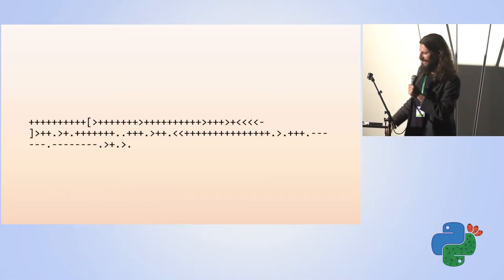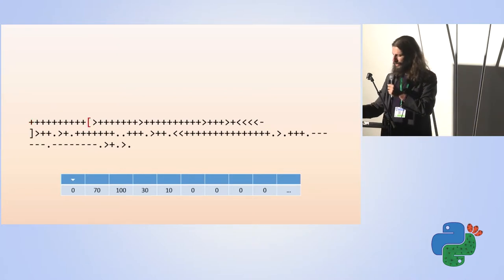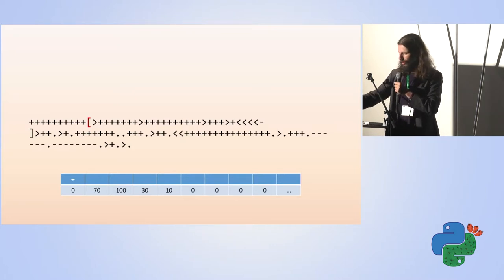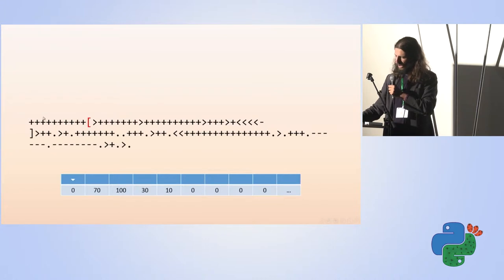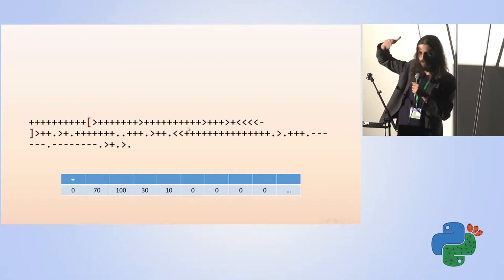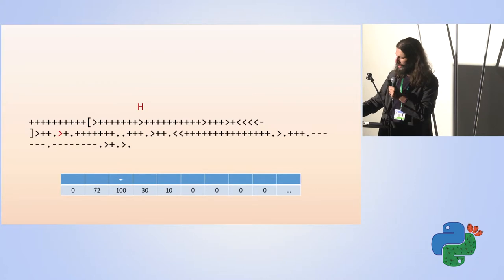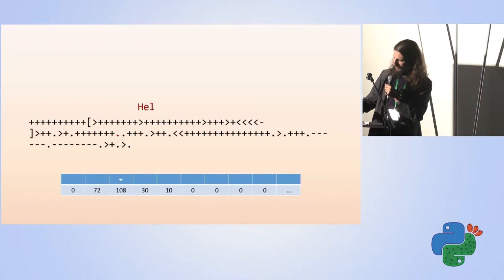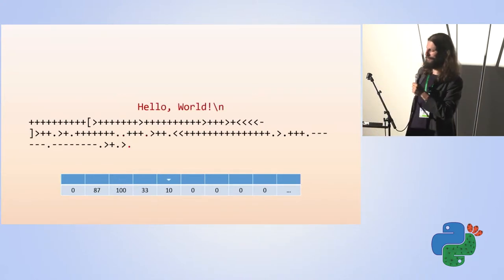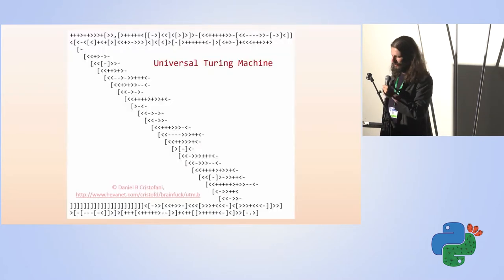Let's look at a more interesting piece of code. After running a big loop ten times — because there are ten pluses — we'll have 70 in one cell, 100 in another, 30 in another, and 10 in the last. Then we go one to the right, add two, and output a capital H. Go another one to the right, add one, and output a capital E. This is Hello World in BrainFuck — not very optimized, but a reasonable hello world.